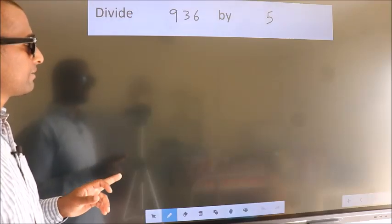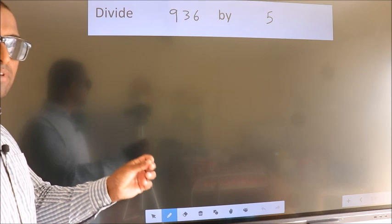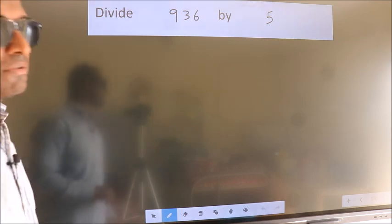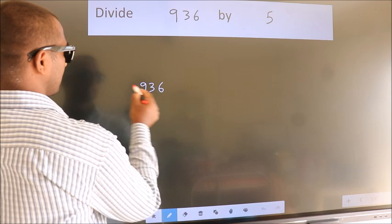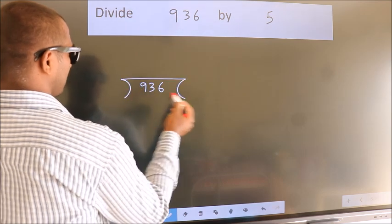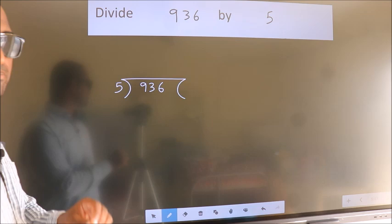Divide 936 by 5. To do this division, we should frame it in this way. 936 here, 5 here. This is your step 1.